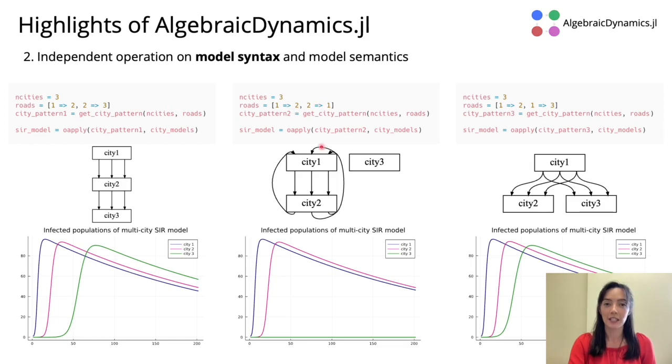So if we change it, we get a different diagram of cities. For example, suppose we have people flowing from city 1 to city 2 and then from city 2 back into city 1. This leaves city 3 as sort of an isolated island. Another example might be people flowing from city 1 directly into both cities 2 and 3.